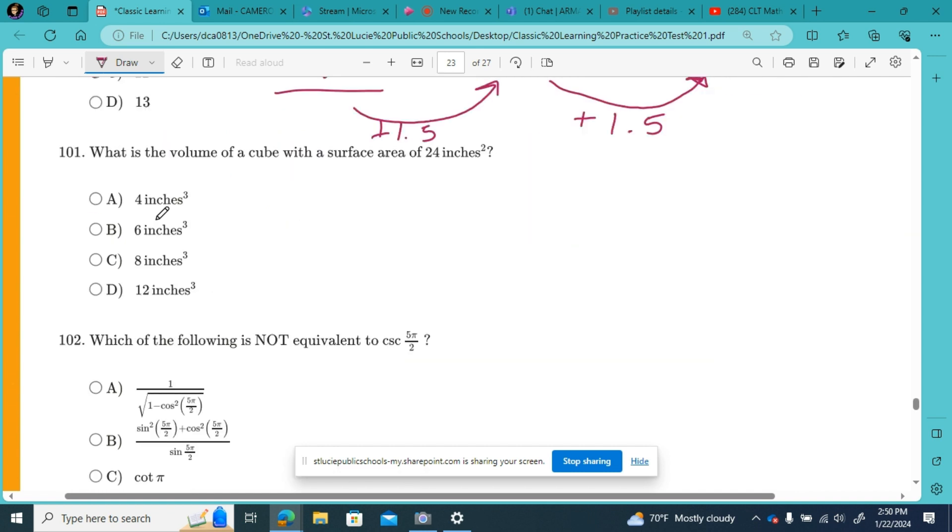And then moving forward, number 101, the volume of a cube with a surface area of 24 square inches. What is the volume of a cube with a surface area of 24 square inches? So volume of a cube, volume equals length times width times height. And in a cube, your length and width and height will all be equal.